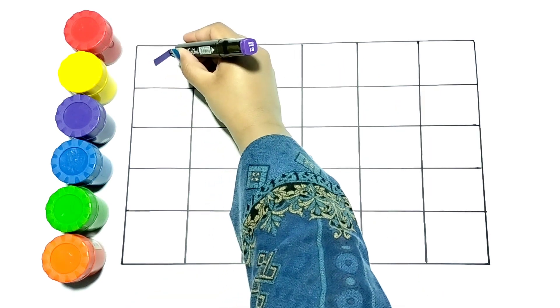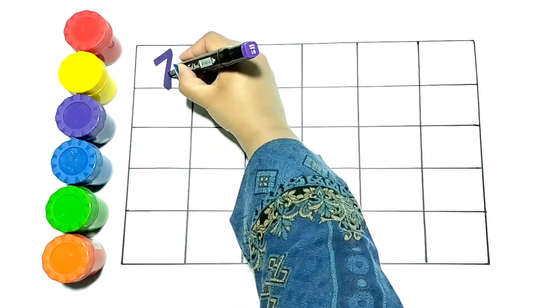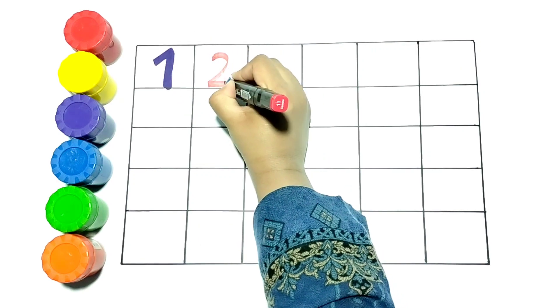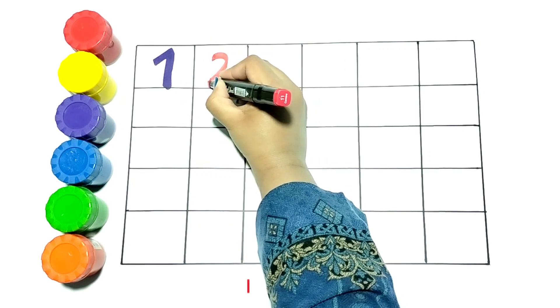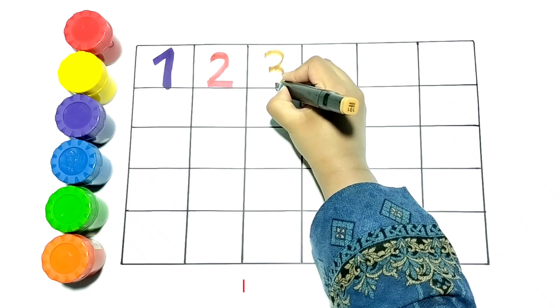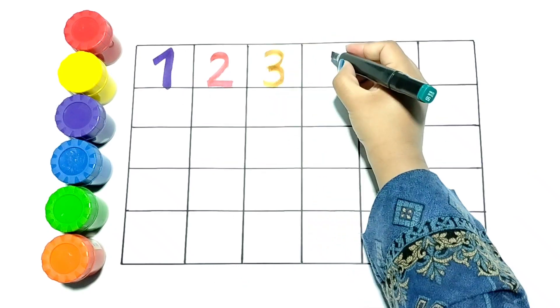Let's write 1. I am writing 1 with purple color. Let's write 2. I am writing it with red color. Now I am writing 3. It is in orange color.